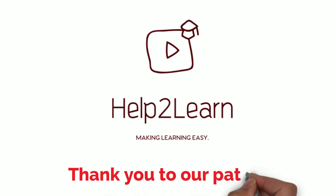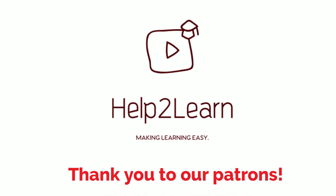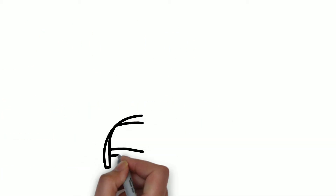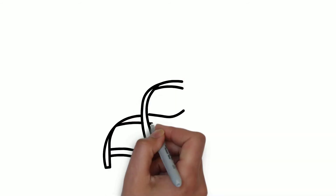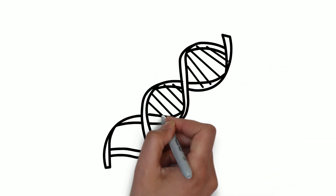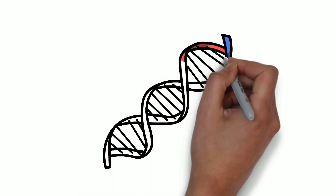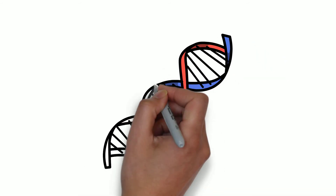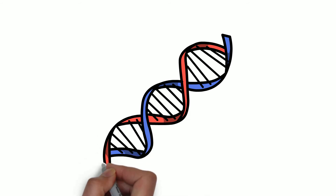Hi everyone! I hope you've had a great week so far and I hope you're ready for another video on this human biology course. Today we are going to talk about the stuff that allows us to be here and the stuff that gives us most of our traits, the good and the bad unfortunately. That stuff, as you might have guessed, is DNA.